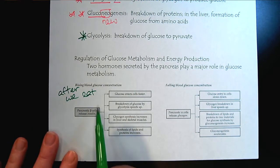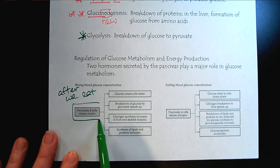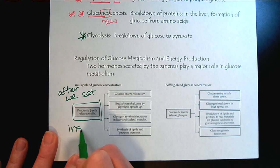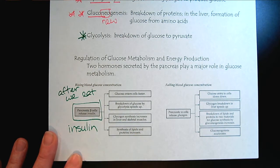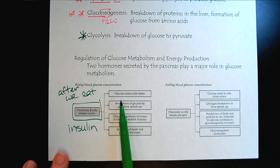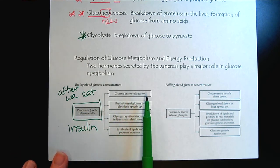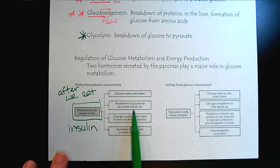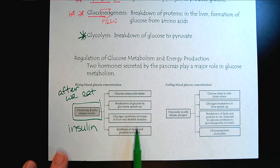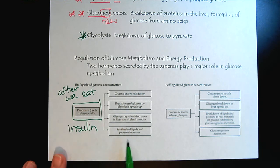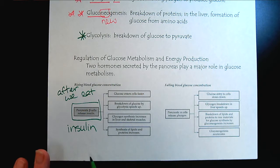At that time, the pancreatic beta cells will release insulin. The release of insulin allows glucose to enter cells faster, it breaks down glucose by glycolysis, it helps with glycogen synthesis increasing, and it helps with the synthesis of lipids and proteins — all about breaking down food so we can use it for energy and to make other important biological molecules.